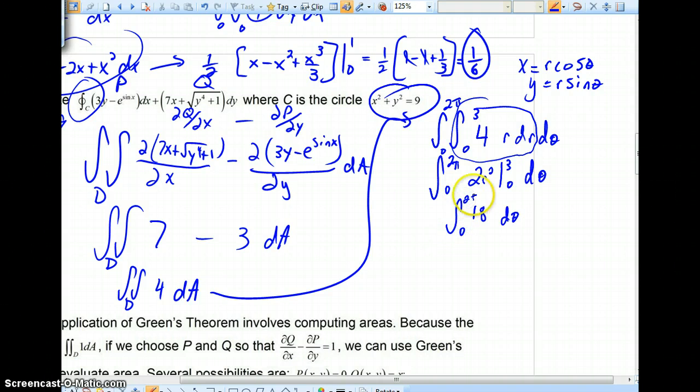Very simply then, following up an antiderivative with respect to theta, we'd get 18 theta evaluated between 2 pi and 0. 18 times 2 pi is 36 pi. Of course, plugging in 0 yields 0 itself.